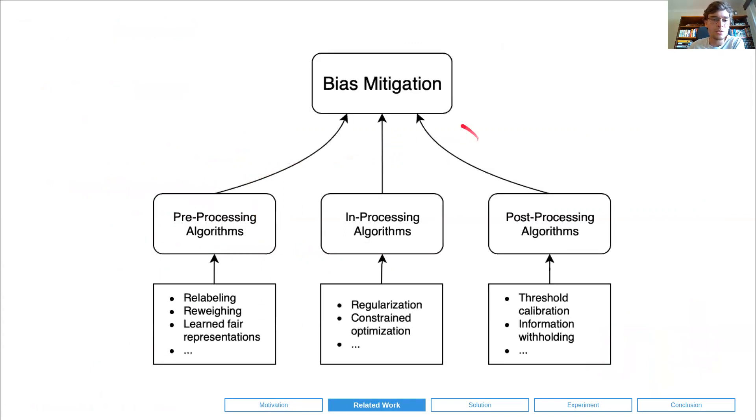Regarding bias mitigation algorithms, these are often divided into three families: pre-processing, in-processing, and post-processing algorithms. Pre-processing algorithms attempt to correct the biases in the input data itself fed to the model, such that ideally any model that would be learned on that corrected data would not show bias. In-processing algorithms, on the other hand, attempt to correct biases in the learning process itself. Common examples are regularization or constraint optimization. And post-processing algorithms attempt to correct the biases in the output of an already trained model. A common example is that of threshold calibration.